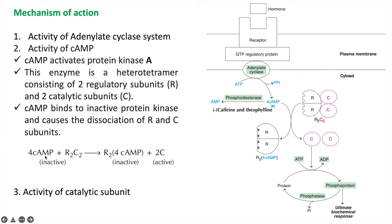Four cyclic AMP molecules bind with the inactive form of protein kinase enzyme, which contains two regulatory and two catalytic subunits. Upon binding, they release two catalytic subunits in active form and two regulatory subunits that remain bound to the four cyclic AMP molecules in inactive form. The third step is activity of the catalytic subunit: the catalytic subunit converts protein to phosphoprotein, with the phosphate group coming from ATP, which becomes ADP. This phosphoprotein then performs its biochemical response, corresponding to the metabolic effects of glucagon.